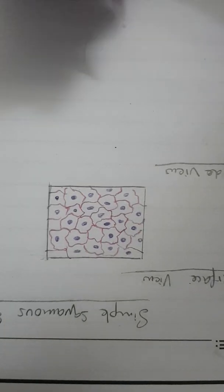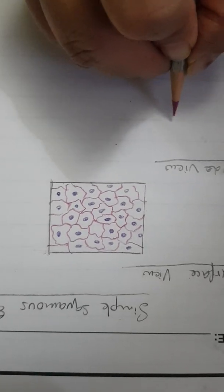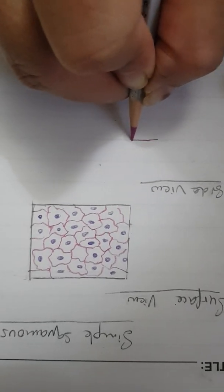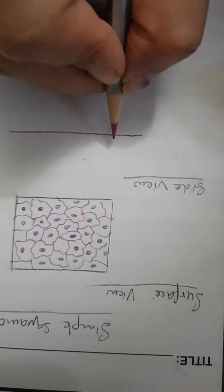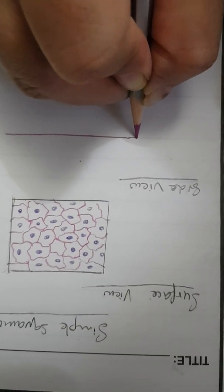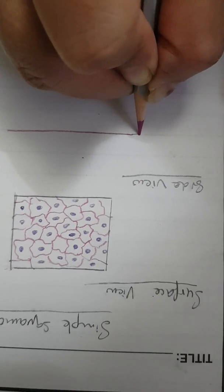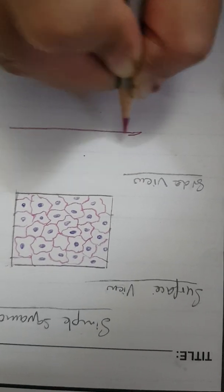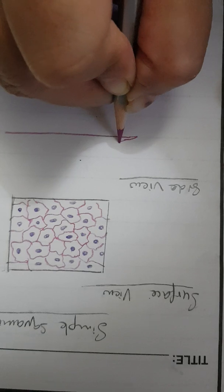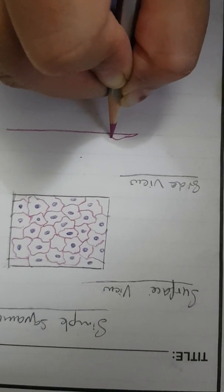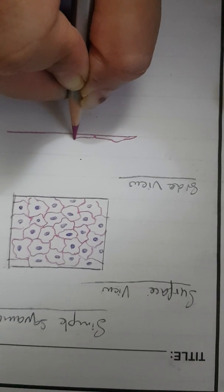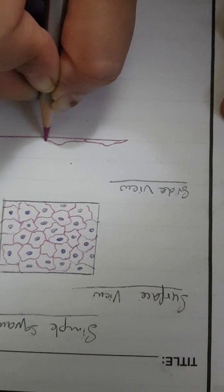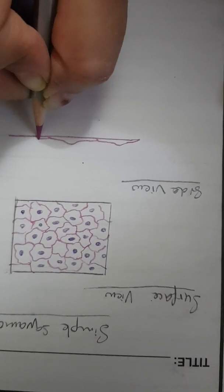For the side view, you will draw the basement membrane in the form of a straight line. Here the cells are fusiform in shape. You just pick up the cell, give a little bulge here, and then bring it back to the basement membrane. Then again pick another cell, give a bulge, bring it back. Again, you can draw three or four cells.